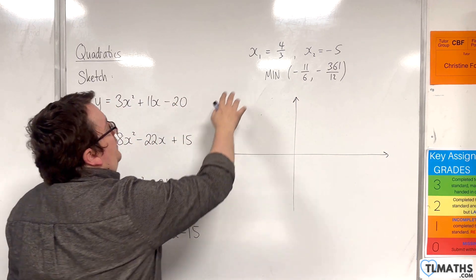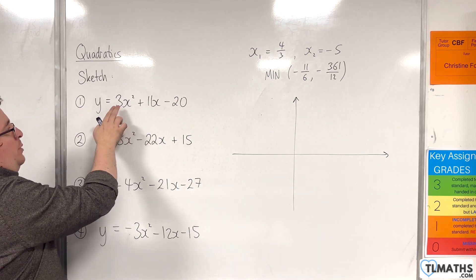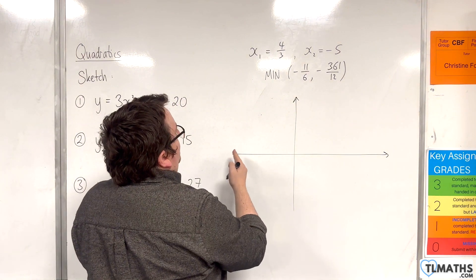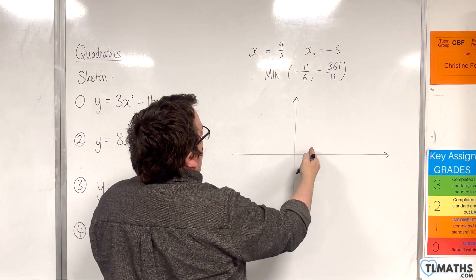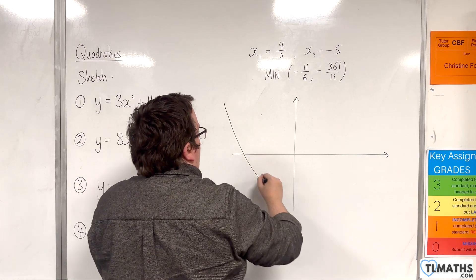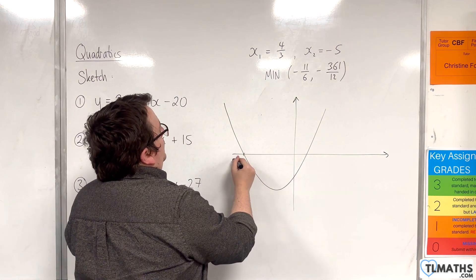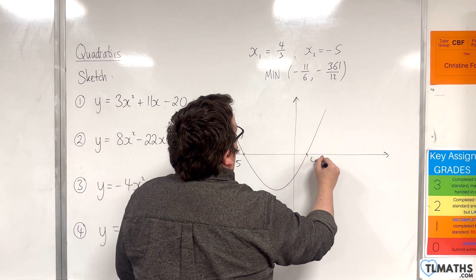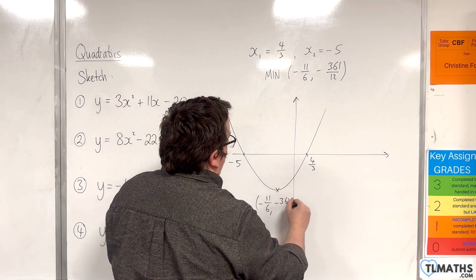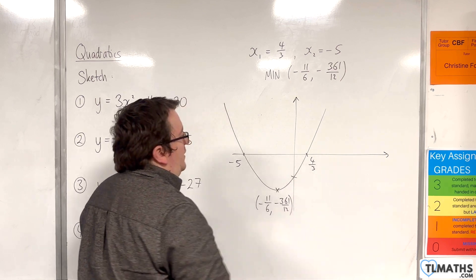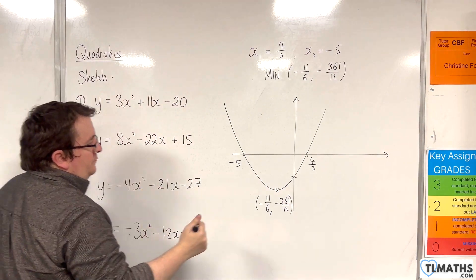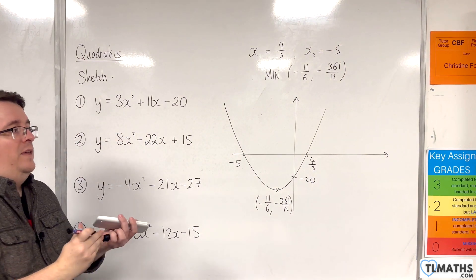So let's draw it. We have a parabola going through 4/3 and -5. It's a positive parabola because the coefficient of x² is positive 3. Now -5 is over to the side and 4/3 is quite close to the y-axis. We know this is in the bottom left-hand quadrant, so our curve looks something like this. This point is -11/6, -361/12, and the other point I'm interested in is when x is 0, which is y equals -20. That is my first sketch.